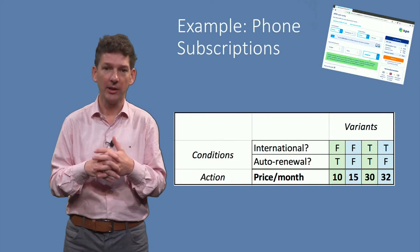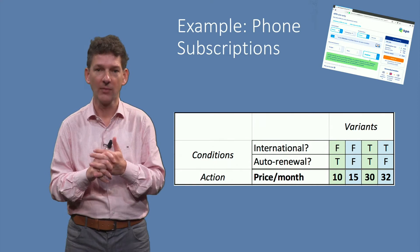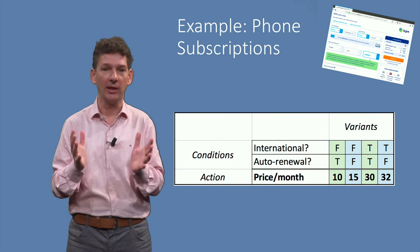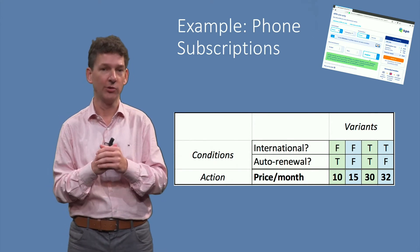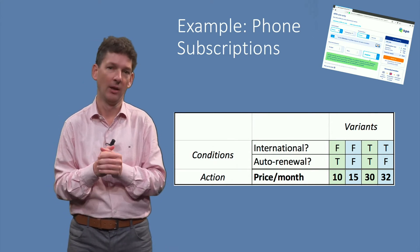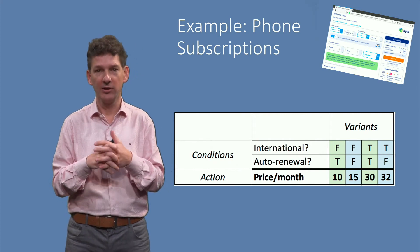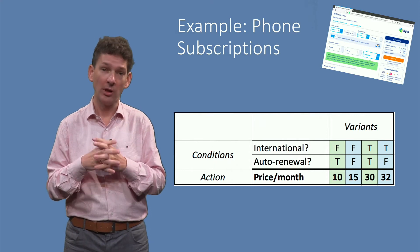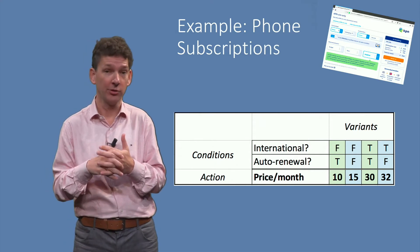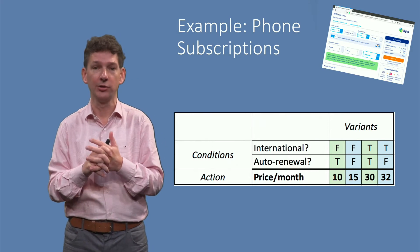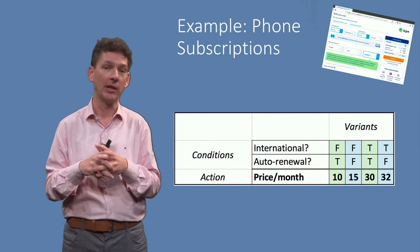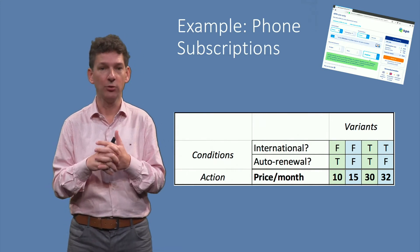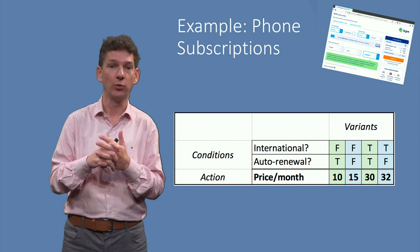Here you can see a very simple example of a decision table. I derived it from a website of a Dutch phone company, which lets users click various options and then determines a price per month. In this simplified table, the price per month is determined by two conditions. The conditions are whether the subscription is for national, which is cheaper, or international, which is more expensive. The second condition is whether the customer is willing to renew automatically, which would also be cheaper.